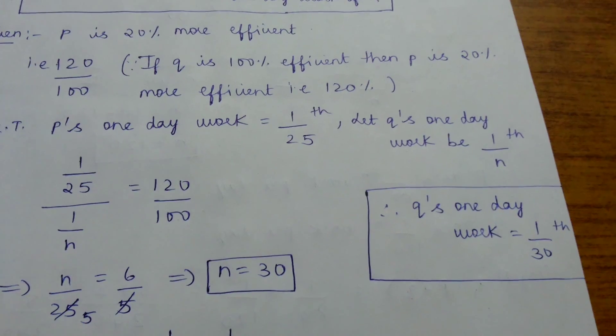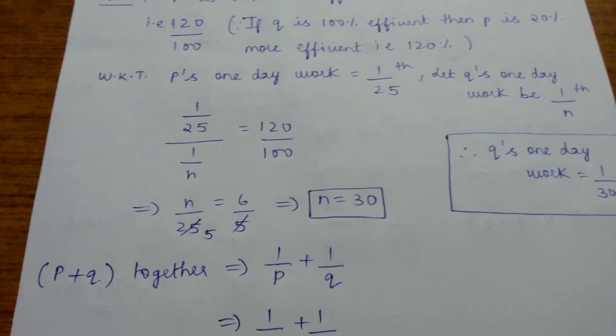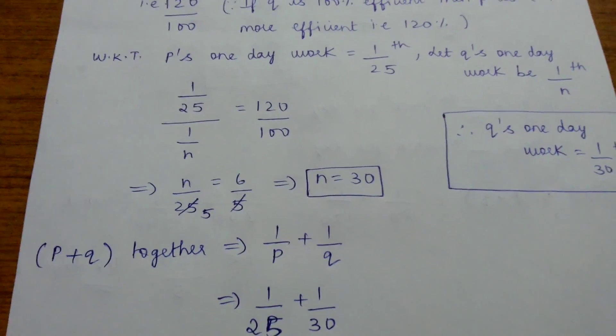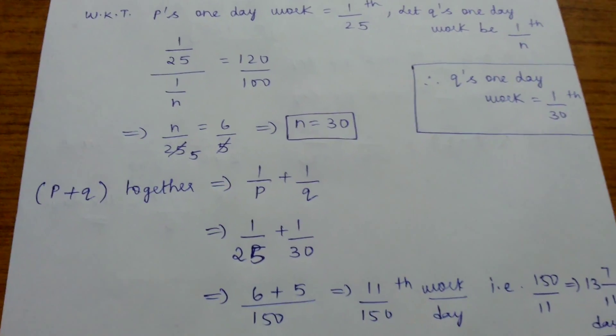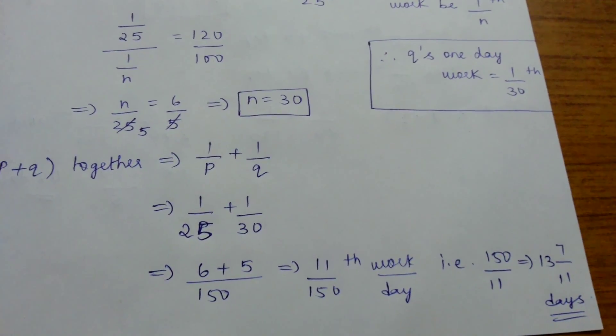That is Q's one day work: 1 by N, which is 1 by 30. Now P plus Q together is 1 by P plus 1 by Q. As we know all the parameters, we can substitute, and our answer comes to be 13 7/11 days.